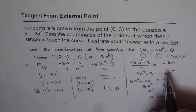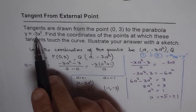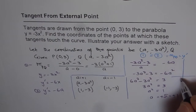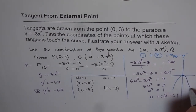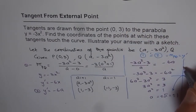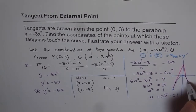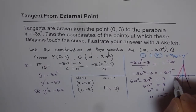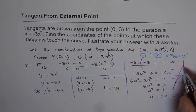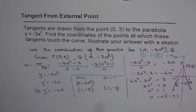Now one part of the question is to illustrate your answer with a sketch. The parabola is y equals minus 3x squared, so it opens downward. Our external point P is at (0, 3), which is on the y-axis above the vertex. We draw tangents from P to the curve, touching at x equals plus 1 and x equals minus 1, with y value minus 3 at both points. Those are the two tangent points Q and Q'.